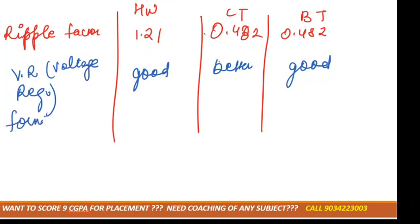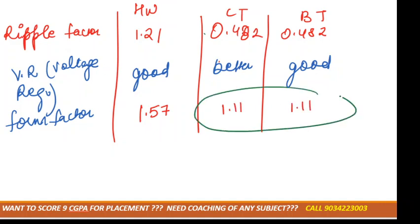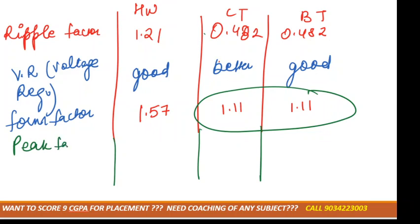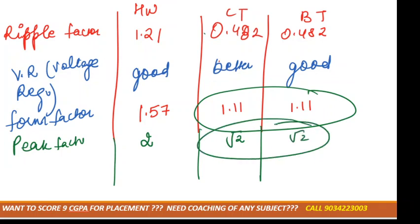Next is the form factor — remember you have studied this formula in electrical. It has fixed values: for half wave rectifier it is 1.57, and for full wave rectifier it is 1.11. Next is peak factor: for half wave rectifier it is 2, and for full wave rectifier it is root 2.